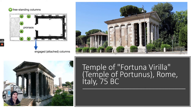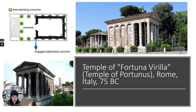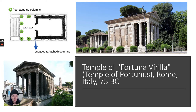The first thing we're going to look at is the Temple of Portunas, which is also called the Temple of Fortuna Varyla. Take a second to look at this and think about what you know about Greek temples from our unit on ancient Greece, and also think about the Etruscans and their take on temples. We don't have any remnants of Etruscan temples because they were made out of wood, but we did talk about their layout and what they looked like.